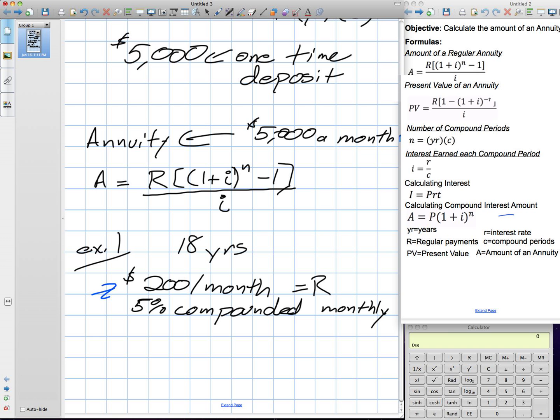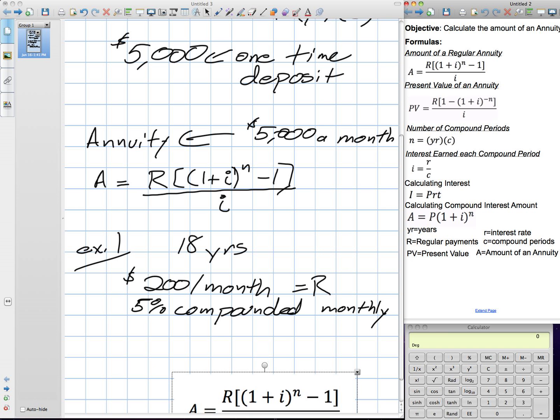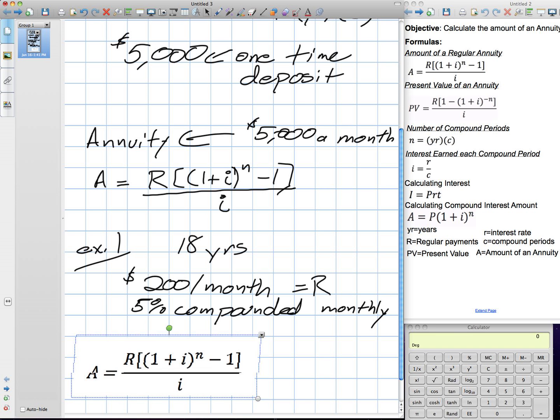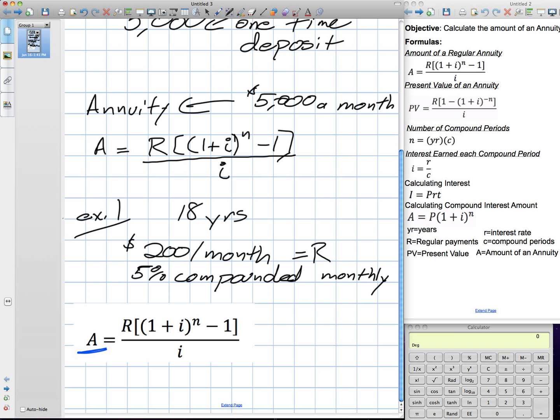So every month $200 is what they're going to put in, that's going to be our regular payments. They're also going to get compound interest every month. Let's say the bank is going to give them 5% compounded monthly. So because these are regular payments, we don't use the formula we had the other day. The amount in the bank is going to increase by at least $200 every month plus earning interest on that new amount.